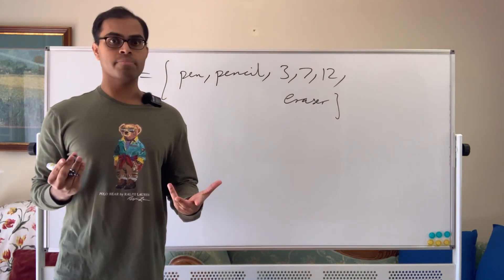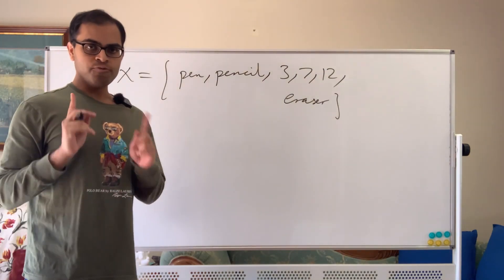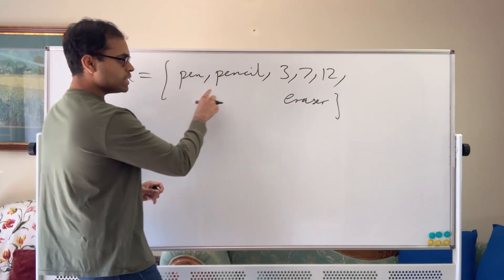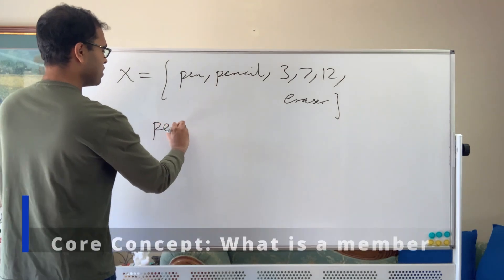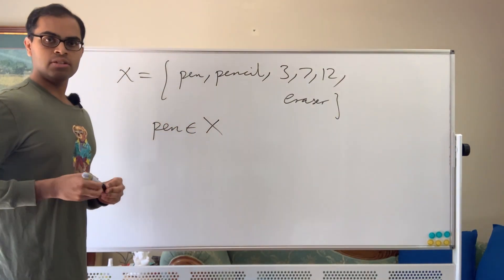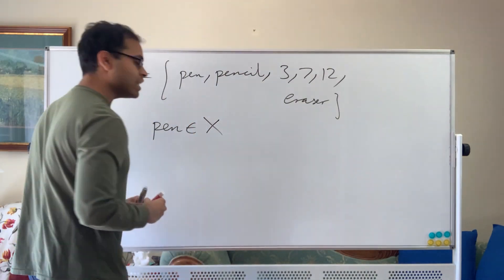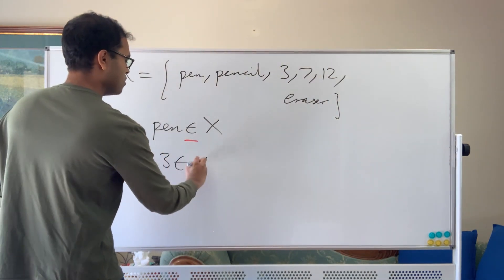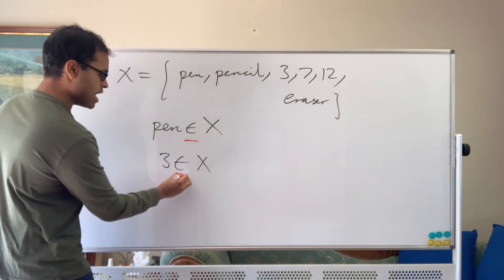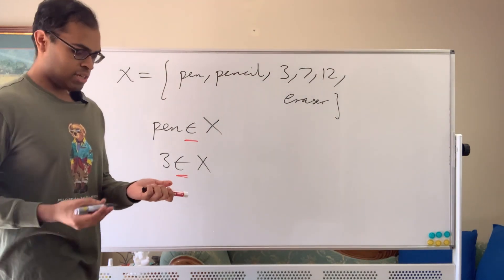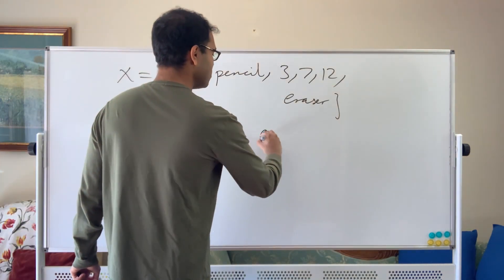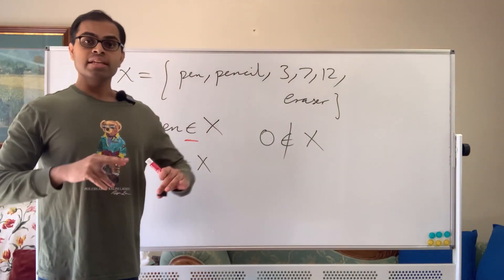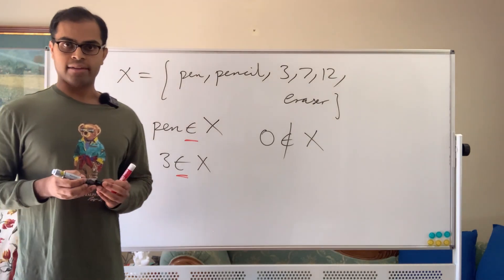First, let me introduce the notation for membership. What does it mean for something to be a member of x? It means it's in the set x. We denote it as: pen ∈ x, meaning pen is an element of x. Similarly, 3 ∈ x. And if something is not in x — for example, zero — we write 0 ∉ x with a line through the symbol. This is called membership.